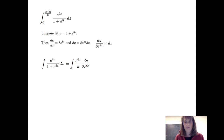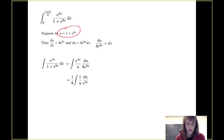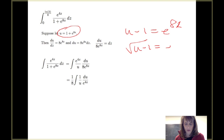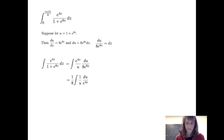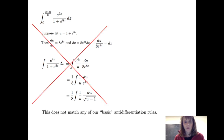Just for a moment, we'll have a mixture of z and u. Simplifying, I pull the 1/8 out in front and get the integral of 1 over u times du over e to the 4z. We can work with u = 1 + e to the 8z to substitute for e to the 4z: subtracting 1 gives e to the 8z = u minus 1, so e to the 4z equals the square root of u minus 1. But that does not match one of our basic formulas for integration — so we need to try a different substitution.